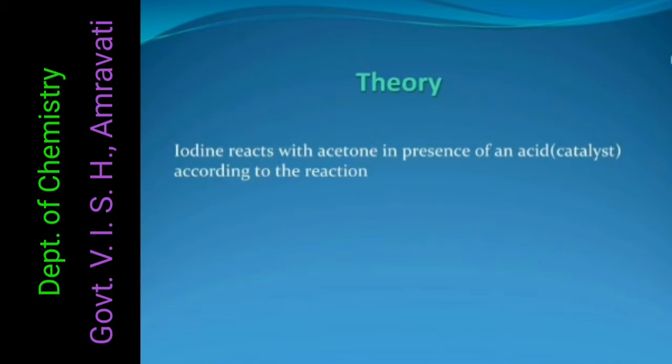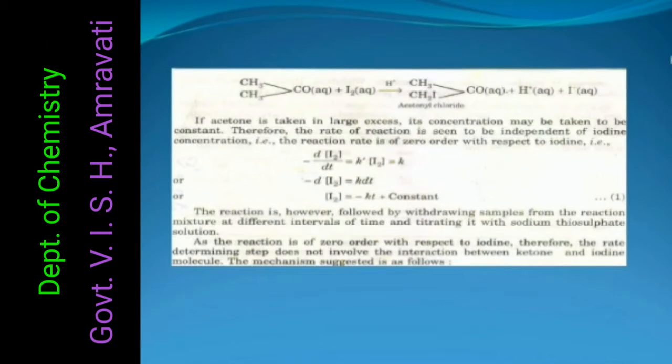Iodine reacts with acetone in presence of an acid according to the reaction. Aqueous acetone reacts with aqueous iodine solution. It gives iodoform, H positive ions and I negative ions. If acetone is taken in large excess, its concentration may be taken to be constant.